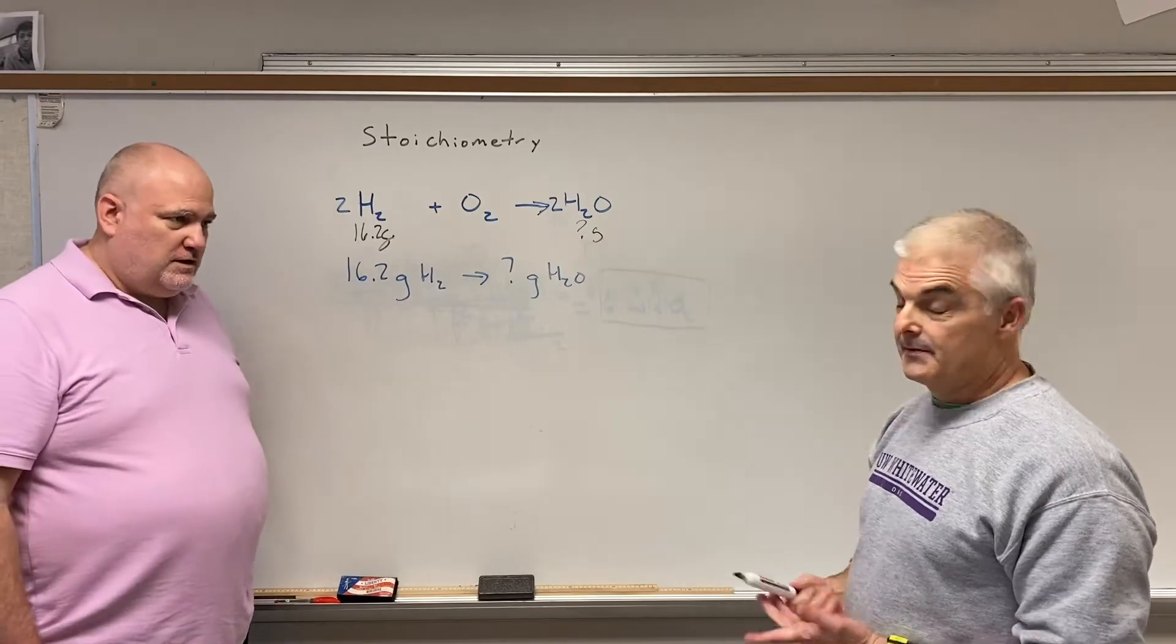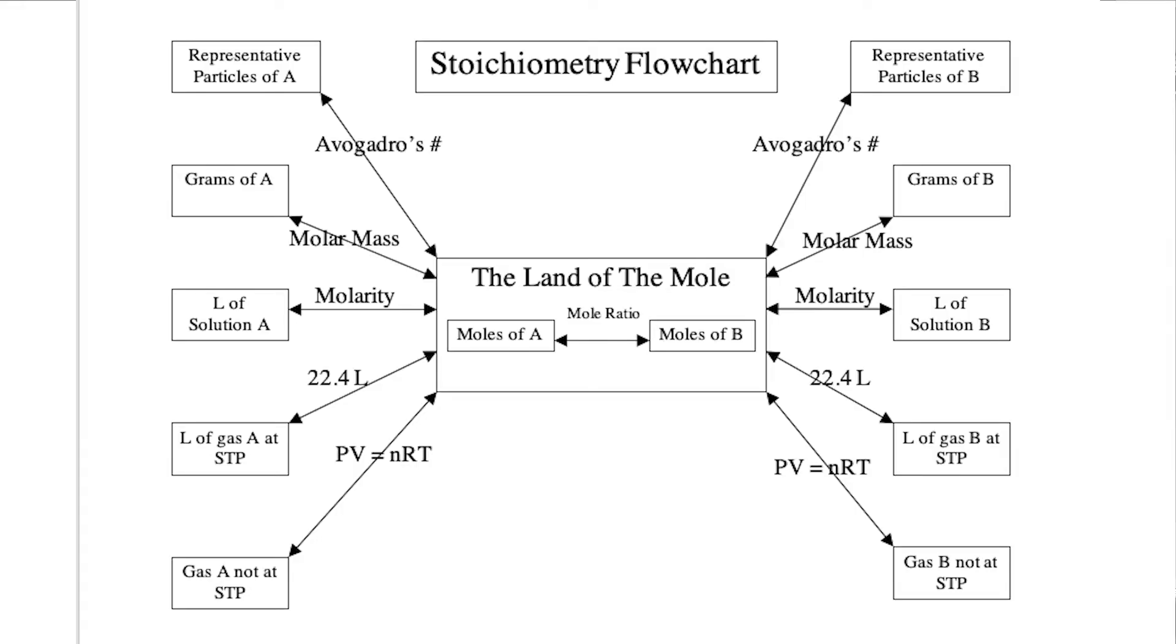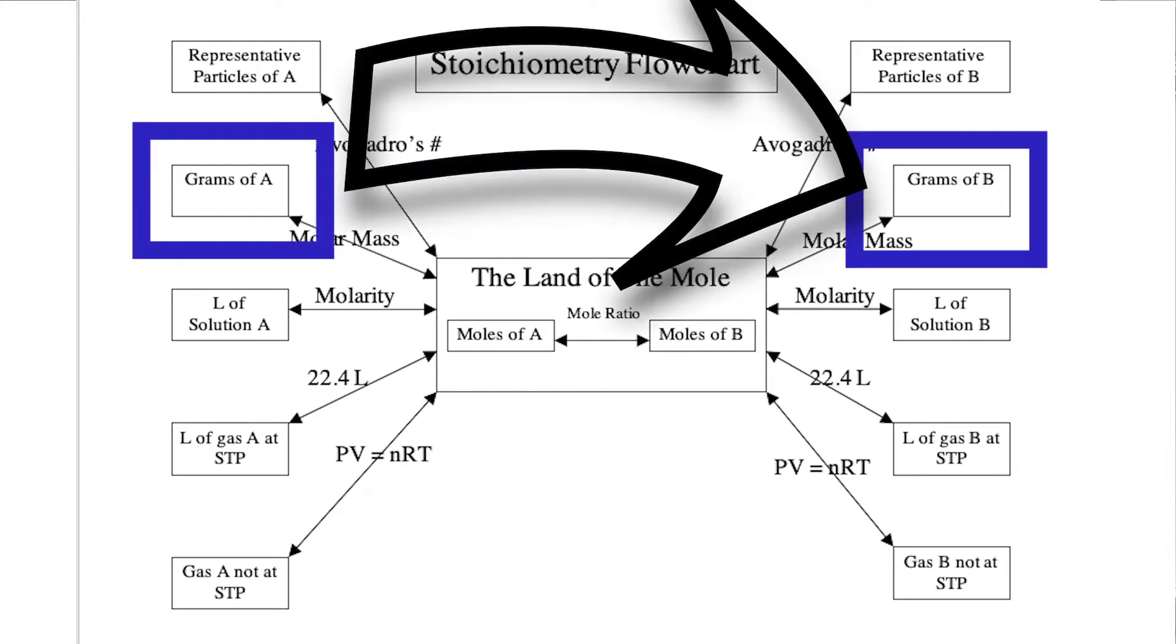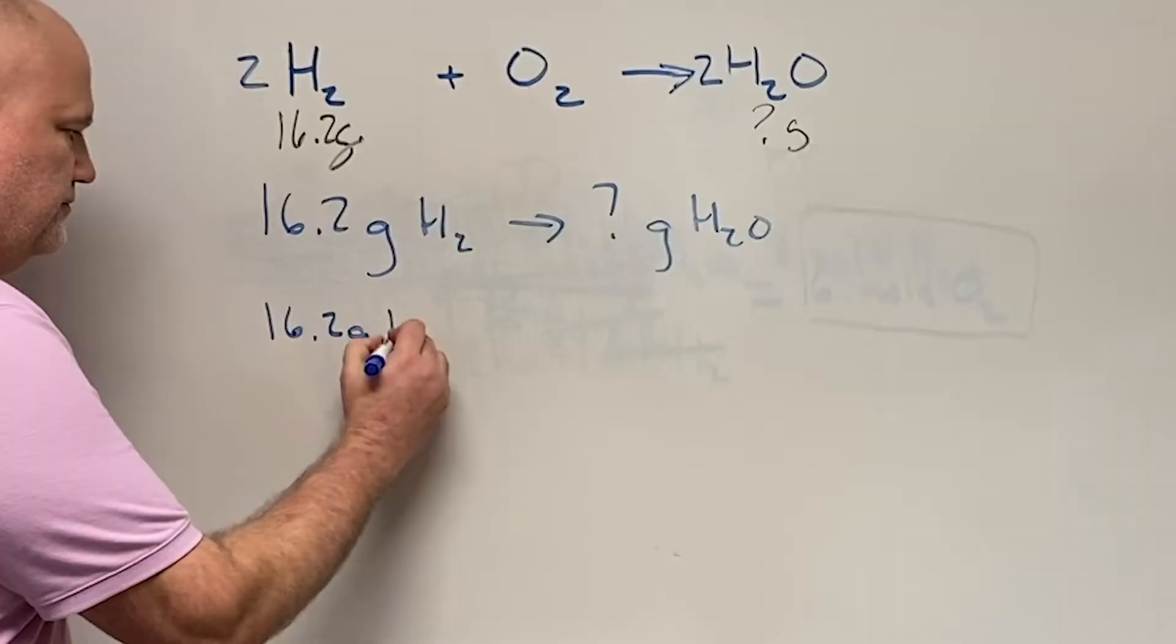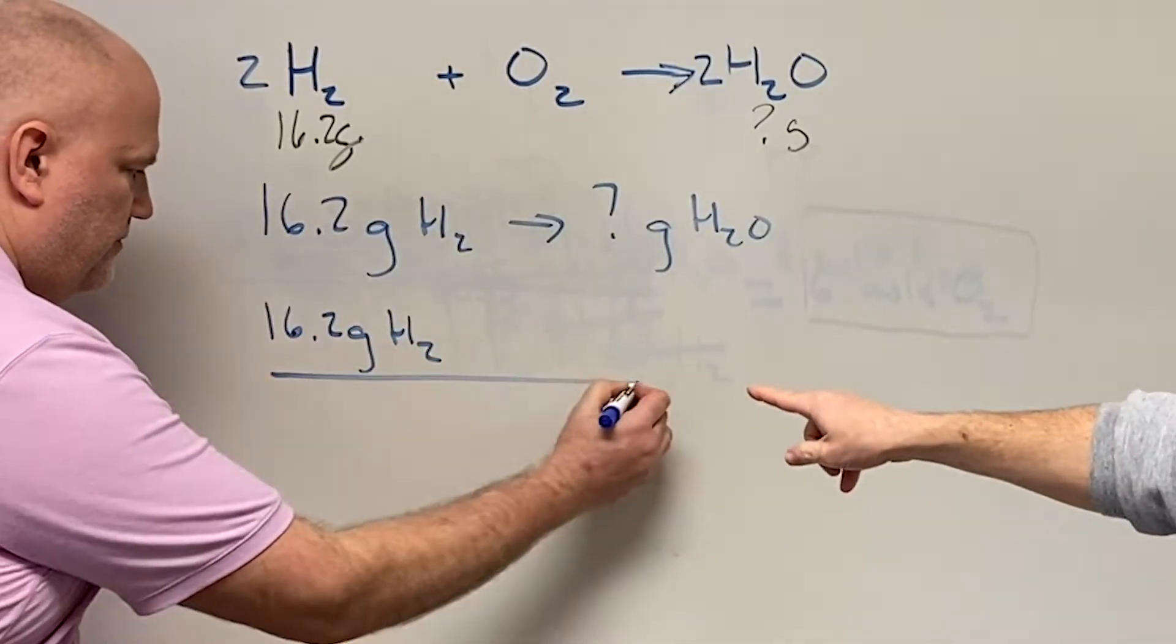So we have this table that you're looking at right now. So now, yeah, on the mole map or the land of the mole, if you're looking at the land of the mole, we're trying to go from grams to grams. And what you'll notice is there's different fractions along the way. So always start with what you know as a fraction over one. So you can see Mr. Dimitrovic, 16.2 grams. Notice he wrote H2 over one.